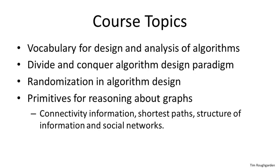A graph data structure has vertices and edges which connect pairs of vertices. Graphs model, among many other things, different types of networks. Even though graphs are much more complicated than mere arrays, there are still blazingly fast primitives for reasoning about their structure. In this class, we'll focus on primitives for computing connectivity information and also shortest paths. We'll also touch on how such primitives have been used to investigate the structure of information in social networks.